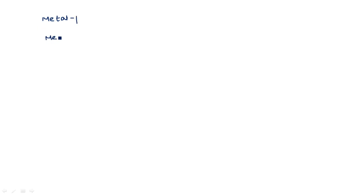In this video you are going to learn about the choice of layers — what are the different layers we have and why we choose a particular layer for a particular operation. The different layers you come across in stick diagrams and layout diagrams are: metal one, metal two, polysilicon, P-plus diffusion layer, and N-plus diffusion layer.